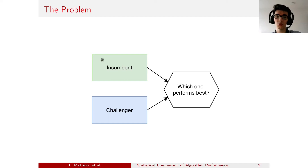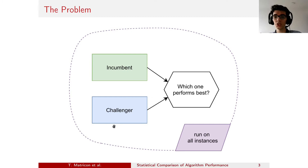We have the first algorithm, which is the incumbent — typically some well-known algorithm which we already have data about. And then there's the challenger, which is seen as a black box so we have no data about it. What we would naturally do is run the challenger on all of the instances to compare it with the data of the incumbent. But this is quite costly.